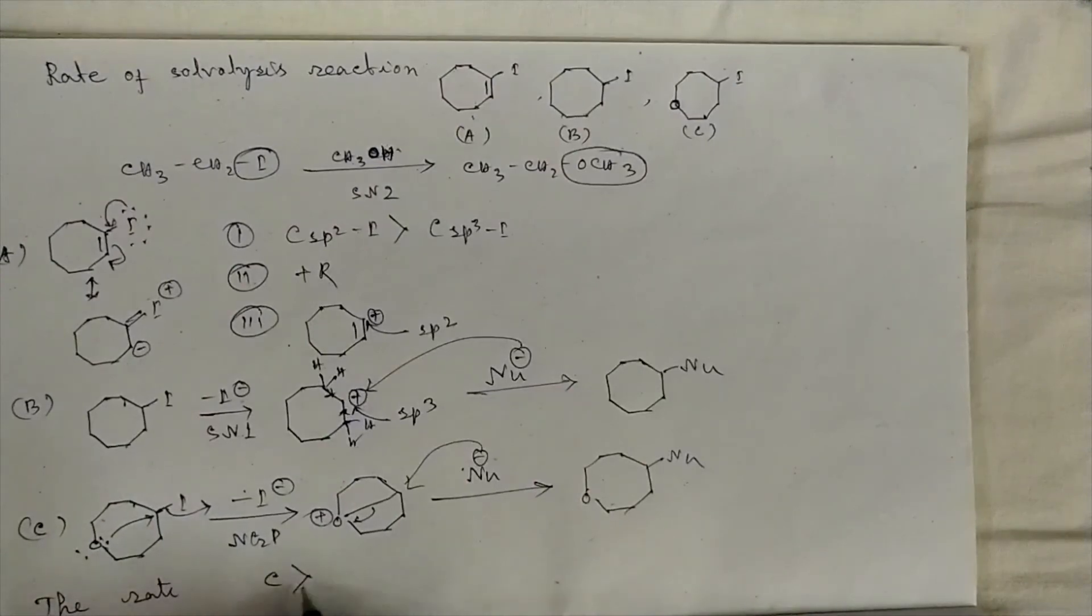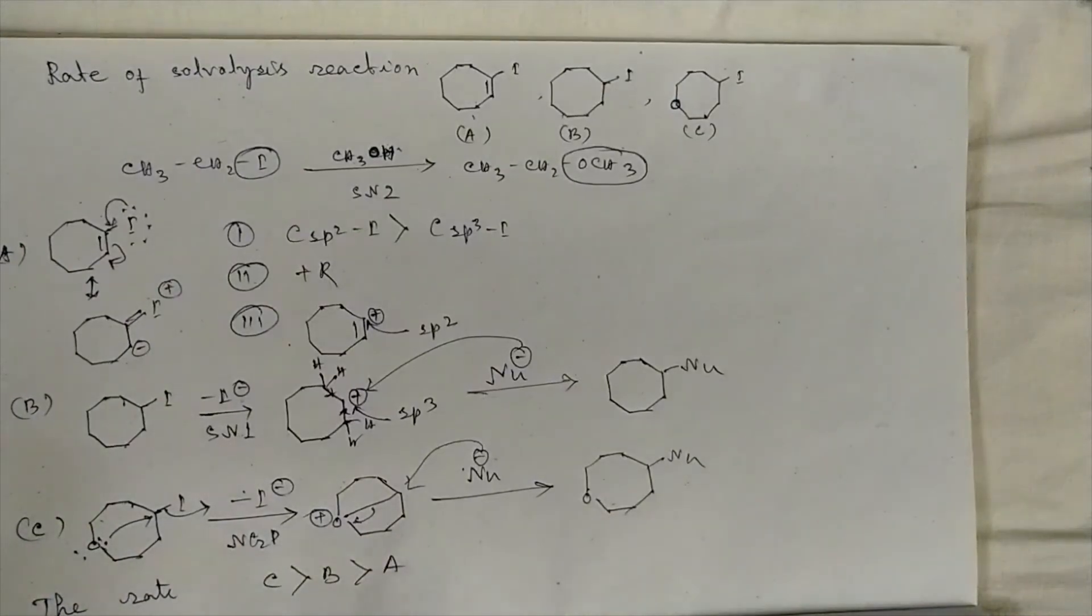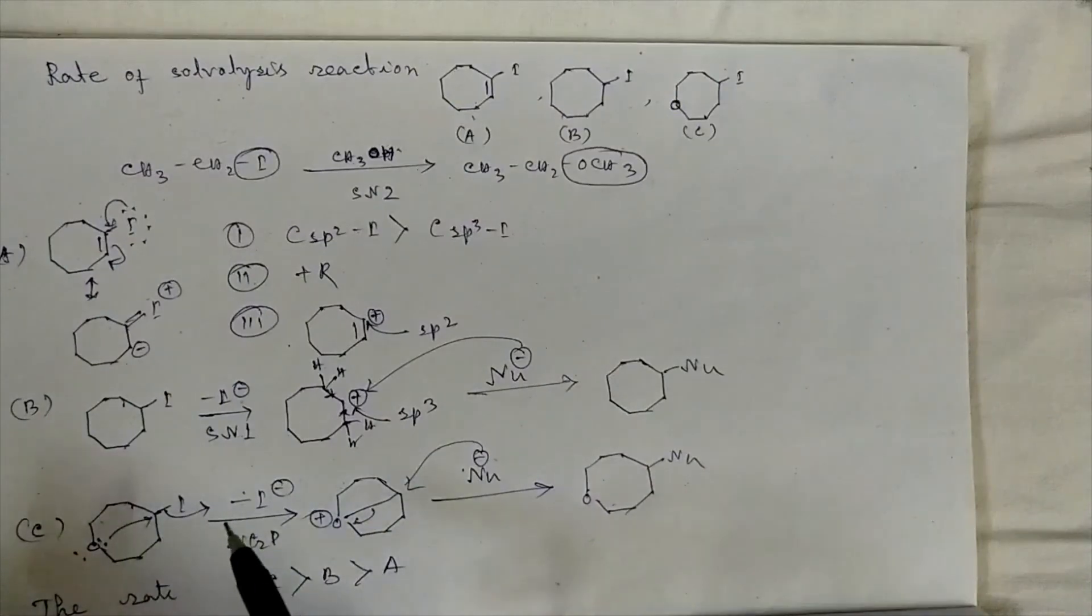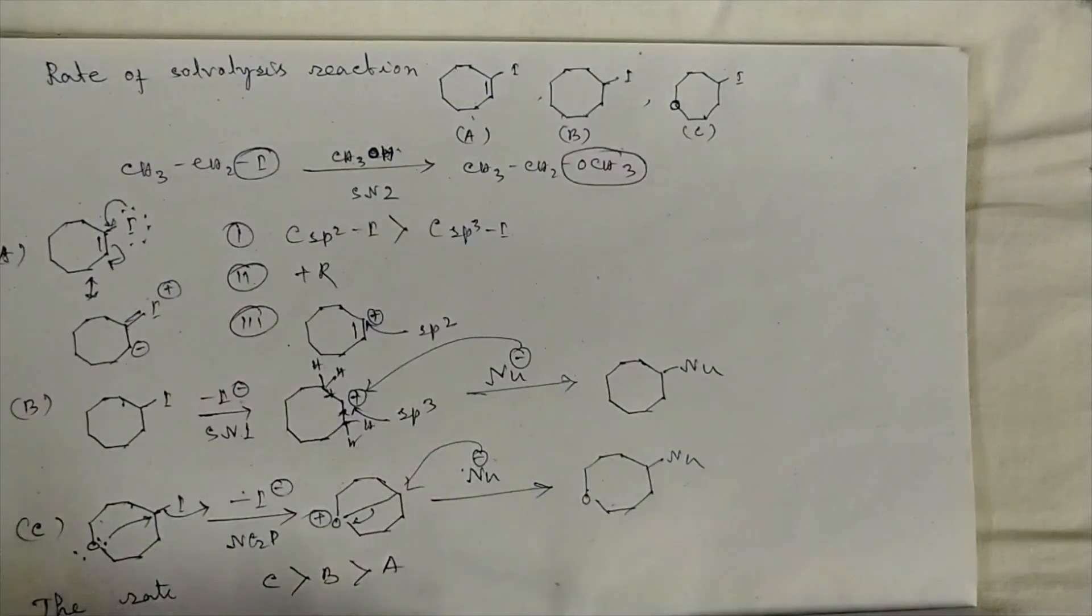C greater than B greater than A, because NGP occurs at the highest speed compared to SN1 or SN2, as the lone pair is easily available for the departure of leaving group. If you want to know details about